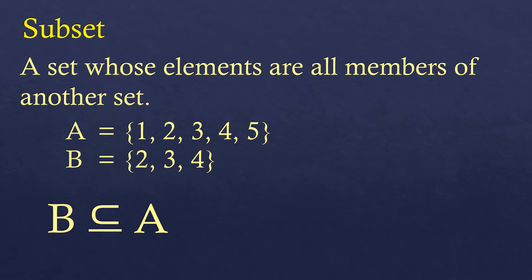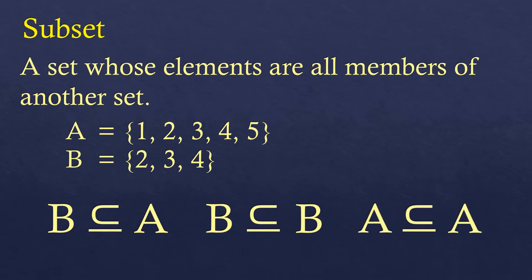If we remove the underline from that C symbol, it's called the proper subset. We can also use that, but not at all times, because a set can be a subset of itself — B is a subset of B — but it is not a proper subset. For it to be a proper subset, it must be two different sets. Also, A is a subset of A — any set can be a subset of itself. But B subset of A can also be written as B is a proper subset of A, because they are not the same set and all elements of B are in A. The symbol for proper subset is like a C without the underline at the bottom.